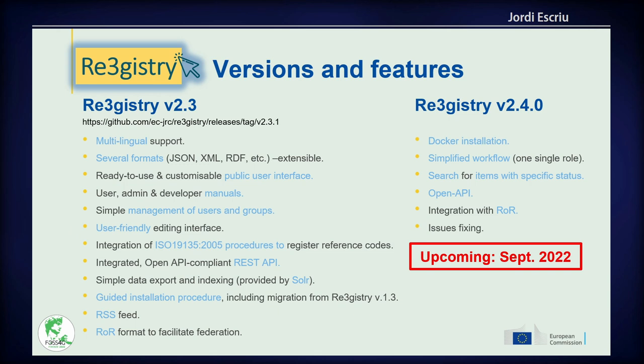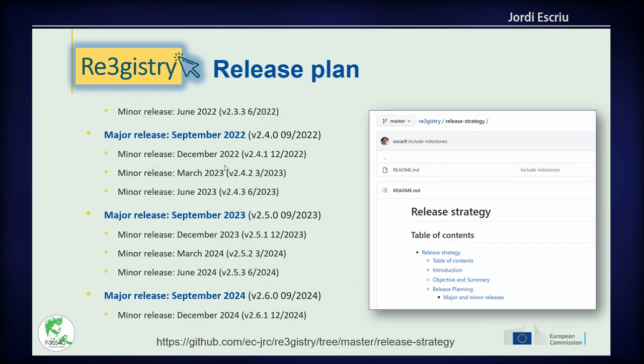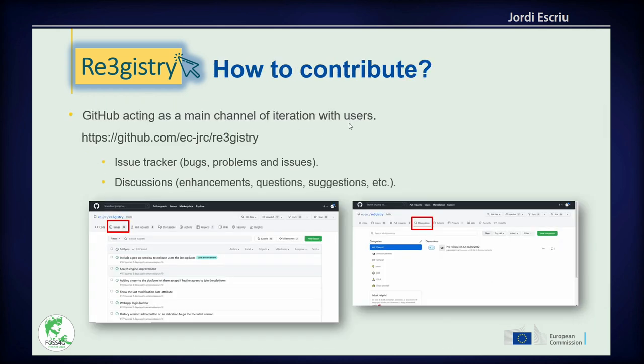This is a summary of the functionalities covered. For the next release, we are working on providing a new Docker-based installation method, simplifying the workflow, improving the API, and strengthening the integration with the registry of registries. Of course, we are also fixing issues detected by us and the community. The next release is meant to be ready by the end of September, and the release plan is available on GitHub.